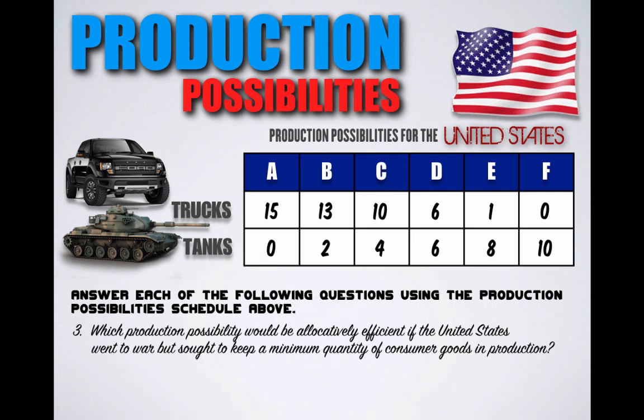Question number three: which production possibility would be allocatively efficient if the United States went to war but sought to keep a minimum quantity of consumer goods in production? Allocative efficiency is defined as producing the optimal amount of goods and services that society needs and wants the most. In this case, the United States needs to defend itself in a time of war yet wants to keep a minimum quantity of trucks in production. Looking at the production possibility schedule, the only combination that gives us tank production while also keeping a minimal amount of trucks in production is combination E — making it the most allocatively efficient combination in this scenario.